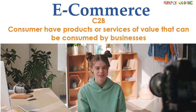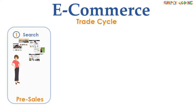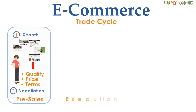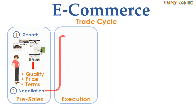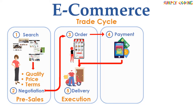E-commerce follows a typical trade cycle or flow. First is Pre-Sales, which consists of two steps. The first step is where the customer searches different websites for the product to be purchased. The next step is Negotiation, where online it involves selecting a supplier who offers a good quality product at the right price and whose terms, such as delivery dates, are agreeable to the customer. Then comes Execution — the Order Phase where the customer places an order for the selected product. At this phase, payment may be made upfront or after delivery.